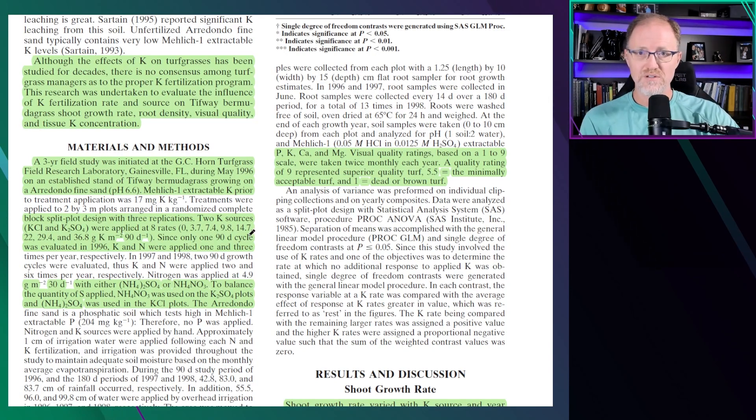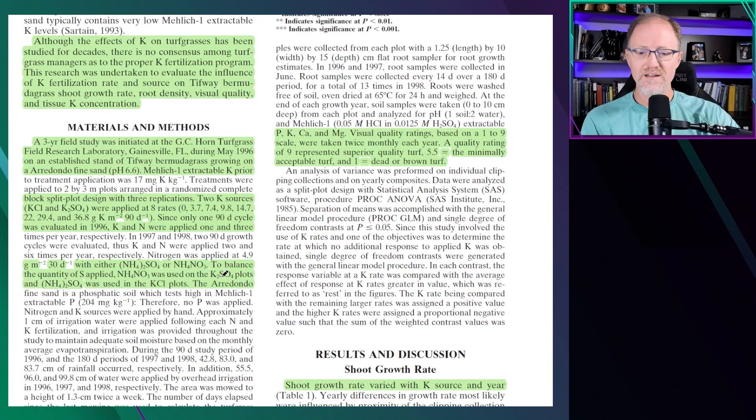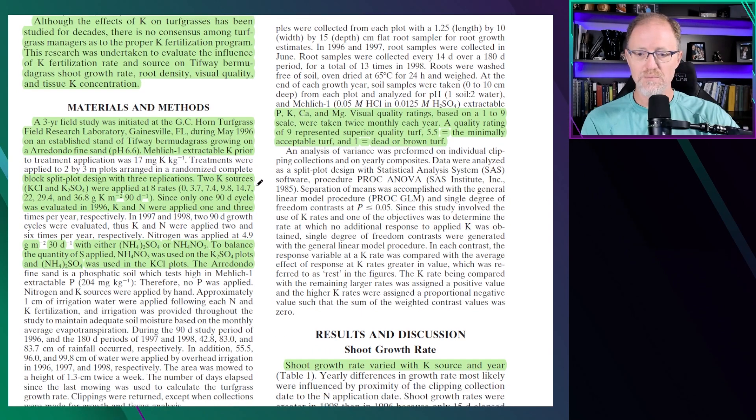He was trying to figure out how much potassium you actually need before you no longer see a beneficial response. Nitrogen was applied monthly at one pound. They did two 90-day cycles, so there's a total of six pounds of nitrogen applied throughout the study. He measured visual quality based on one to nine with five and a half as the minimum acceptable limit.